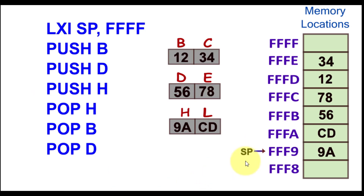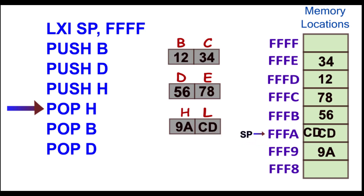Now for the POP instructions — the first is POP H. The stack pointer is currently at FFF9. The data at this stack pointer location is stored in register H, then the stack pointer increments and the next data goes to register L, then it increments again. Notice the contrast: PUSH uses decrement-store-decrement-store, while POP uses store-then-increment.